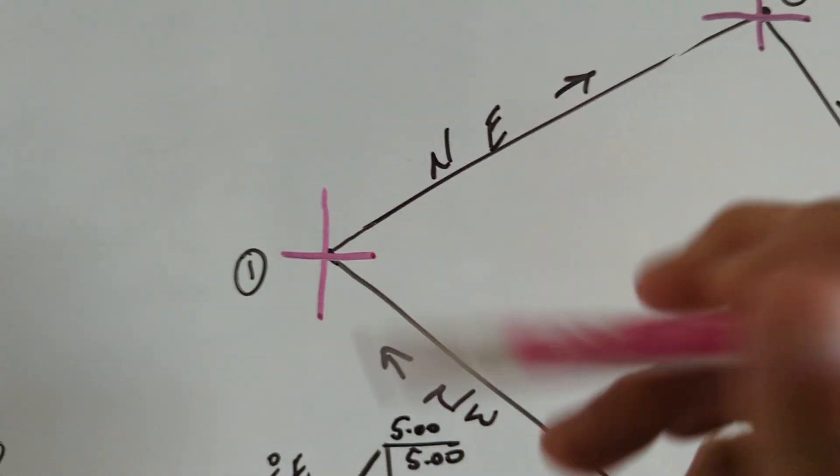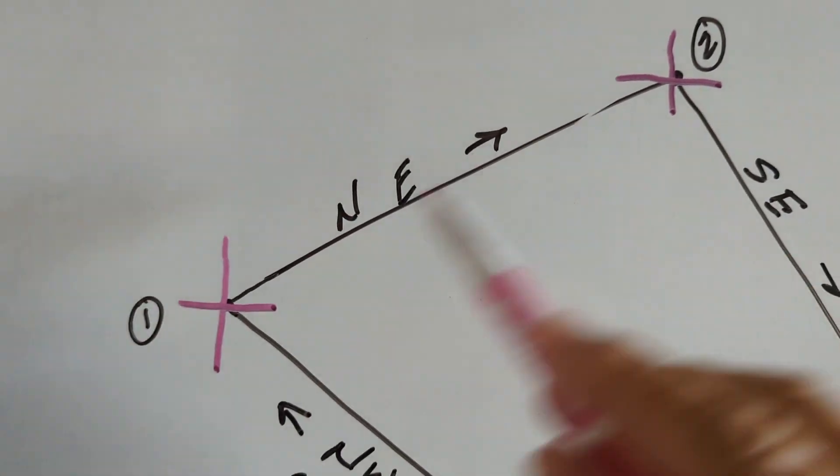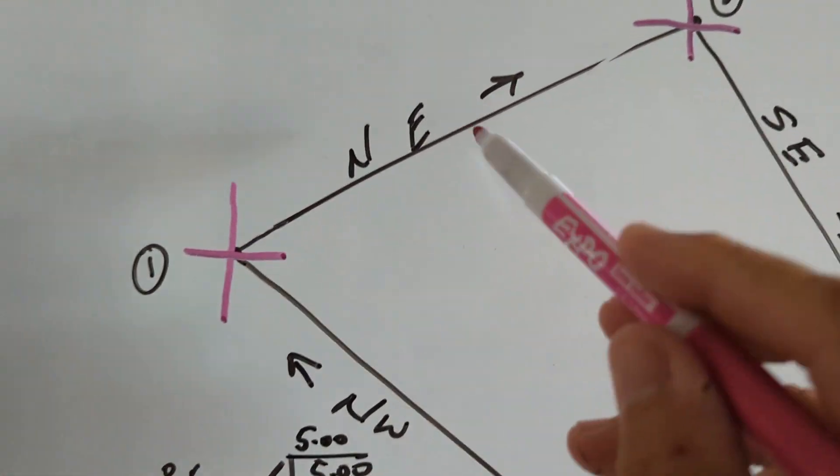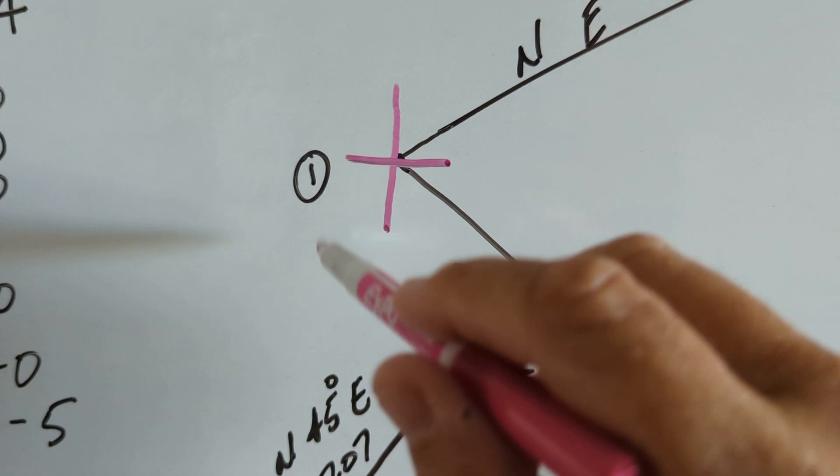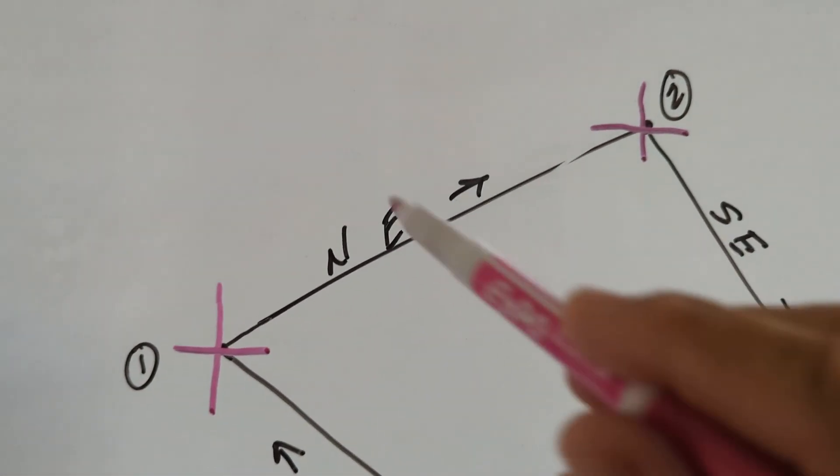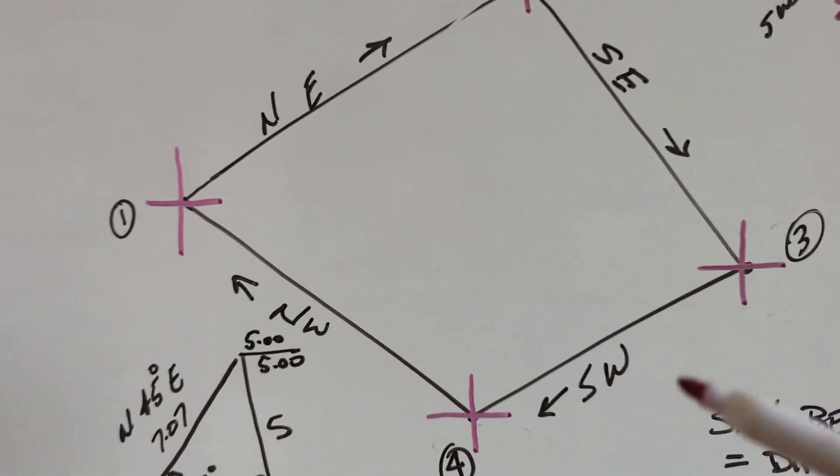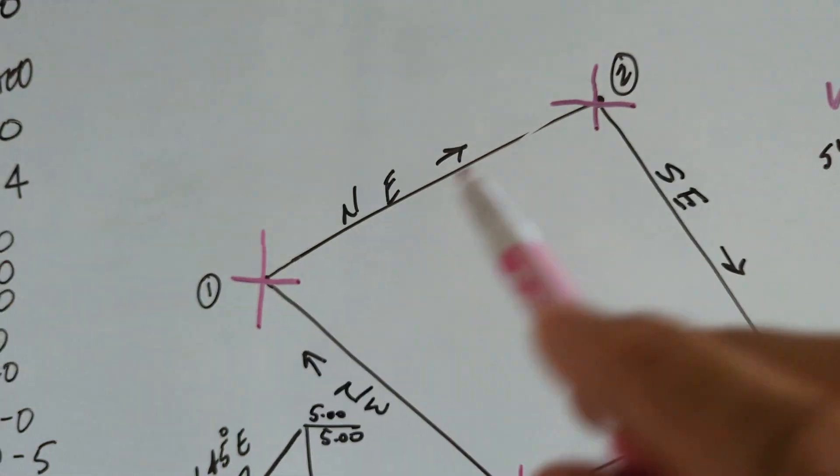And what I try to tell them is, so like on our data collector, if we wanted to inverse between 0.1 and 0.2, we'd put 0.1 going to 0.2 and it'll give us a bearing and a distance because it's inversing the coordinate values of each of those points.